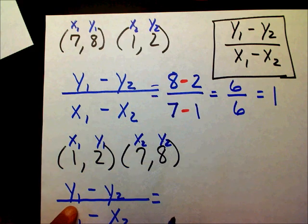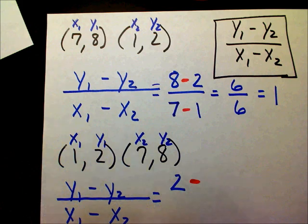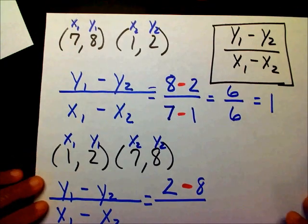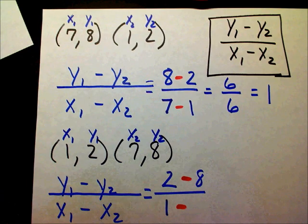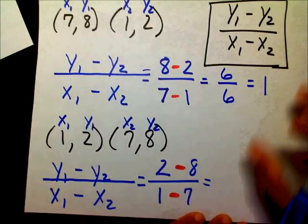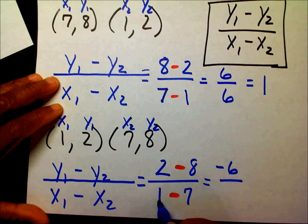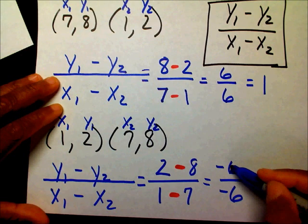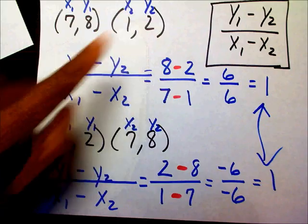My first Y is now 2, and I subtract my second Y, which is 8. My first X is 1, and I subtract my second X, which is 7. So I get 2 minus 8 over 1 minus 7, which is negative 6 over negative 6, which equals 1. You still end up with the same answer. It doesn't matter whether this pair is first or that one is — it doesn't matter.